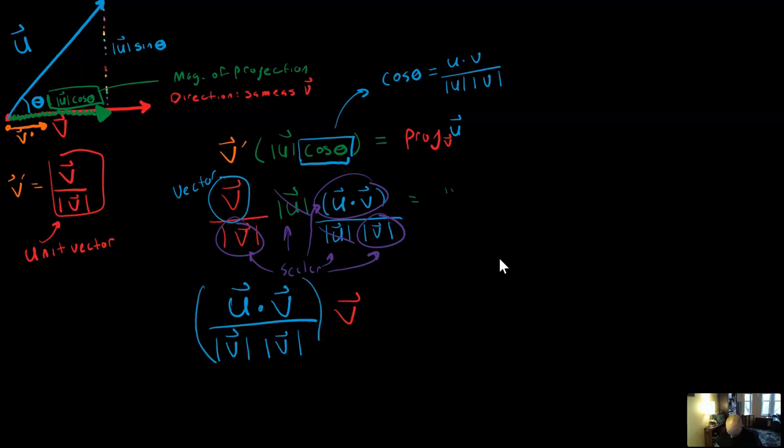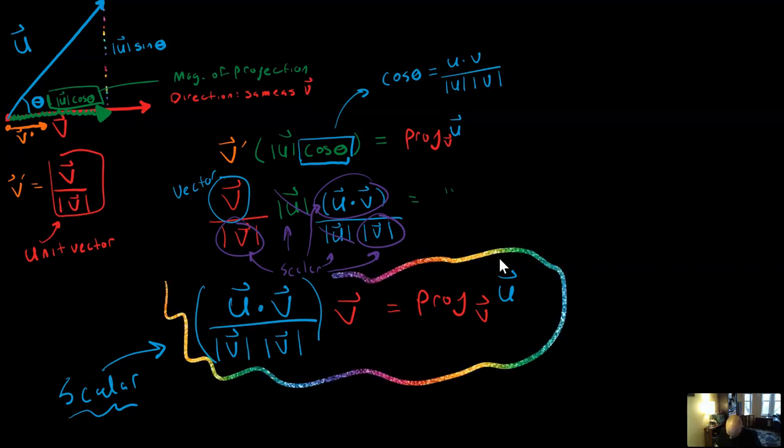I'm going to put this first thing in parentheses because what I want to remember is that this is just a scalar. That's just a number, right, because U dot V is a number and both magnitudes are a number. And so we have kind of done what we wanted to. We found a scalar multiple of V that will equal the projection onto vector V of vector U. And this is that formula for vector projection that you've seen in your textbook.